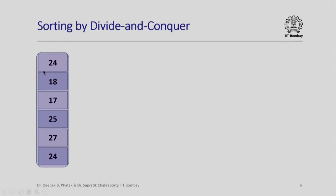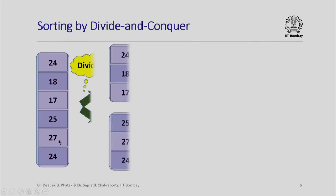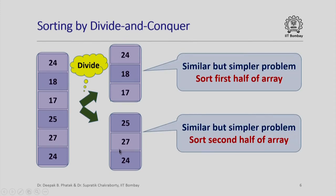Here is our array of six integers which is unsorted and we are required to sort them. Instead of sorting an array of six integers, let us first divide this original problem into two subproblems where each is an array of three integers. I have taken the top three integers and formed the first array, and the bottom three integers to form the second array. So instead of sorting the larger array of six integers, I have two smaller subproblems — can I sort the first half and the second half independently and combine the results?